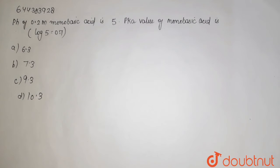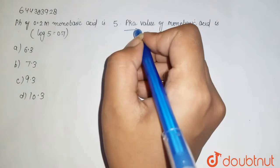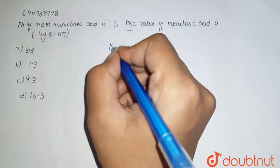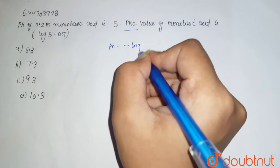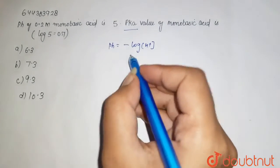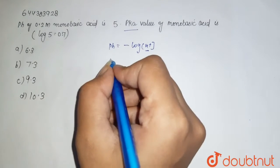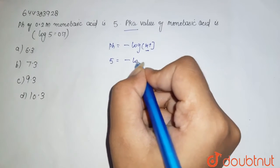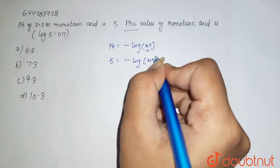is 5. pKa value of monobasic acid is - so we have to find the pKa value here. The pH, which is equal to minus log H+, this is the concentration of your H+. From here we will calculate this. Here pH is given 5, so to find the H+ concentration